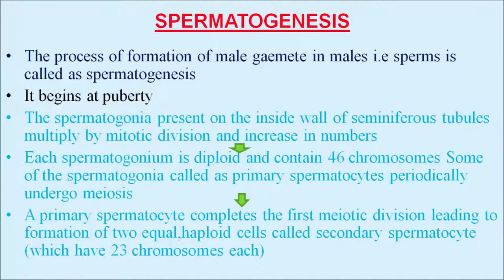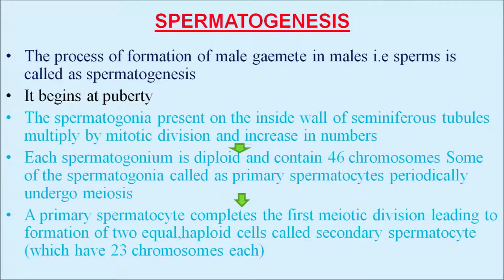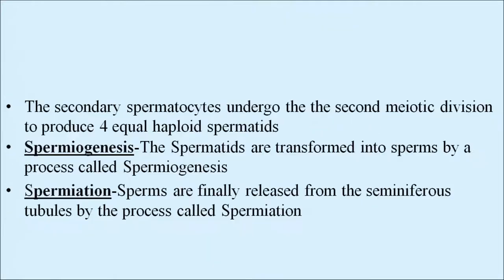For normal fertilization, at least 60 percent of sperms must have normal shape and size, and 40 percent must show vigorous motility. Semen consists of seminal plasma along with sperms. Spermatogenesis is the process of formation of male gametes in males. It begins at puberty. Spermatogonia present on the inside wall of the seminiferous tubules multiply by mitotic division. Each spermatogonium is diploid and contains 46 chromosomes. Some spermatogonia are called primary spermatocytes, which periodically undergo meiosis — a reductional division.